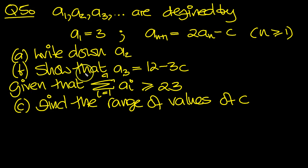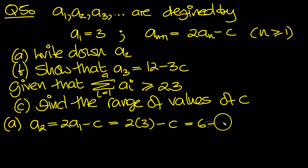So I've summarized the question here, let's have a look. The first part is to write down a2. We'll put n equals 1 in here, so that will give us a2 is 2a1 minus c. And a1 is 3, so it's 2 times 3 minus c. So it's 6 minus c, so that's a2.